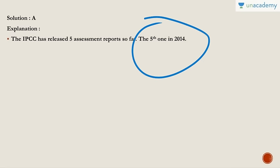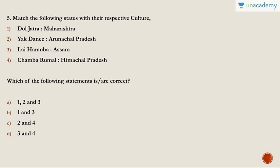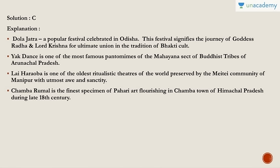Question five: Match the following states with their respective cultures — Dol Jatra: Maharashtra; Yak Dance: Arunachal Pradesh; Lai Haraoba: Assam; and Chamba Rumal: Himachal Pradesh. The correct answer is C — only two and four are correct. Dol Jatra is actually a popular festival celebrated in Odisha, not Maharashtra. Yak Dance is in Arunachal Pradesh — correct. Lai Haraoba is actually in Manipur, belonging to the Meitei community, not Assam.